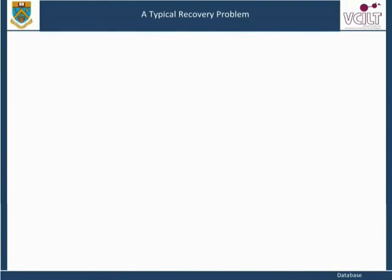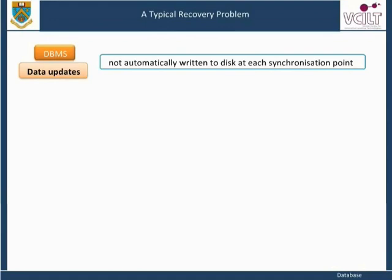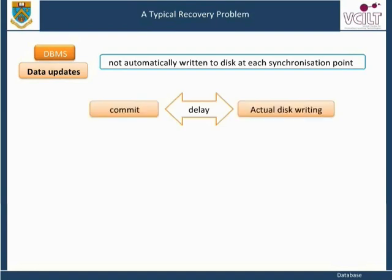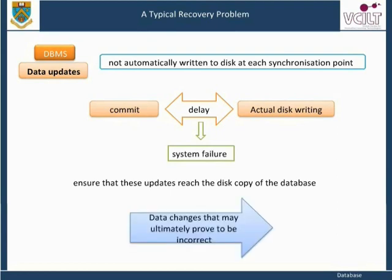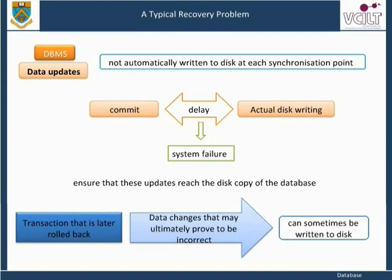A typical recovery problem: data updates made by a DBMS are not automatically written to disk at each synchronization point. Therefore, there may be some delay between the commit and the actual disk writing — that is, regarding the changes as permanent and worthy of being made to disk. If there is a system failure during this delay, the system must still be able to ensure that these updates reach the disk copy of the database. Conversely, data changes that may ultimately prove to be incorrect, made for example by a transaction that is later rolled back, can sometimes be written to disk. Ensuring that only the results of complete transactions are committed to disk is an important task, which if inadequately controlled by the DBMS may lead to problems such as the generation of an inconsistent database.